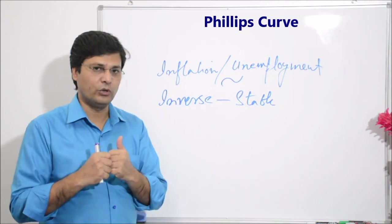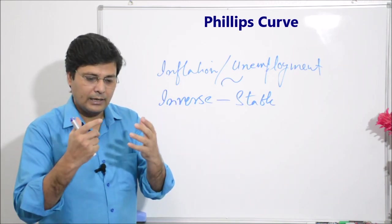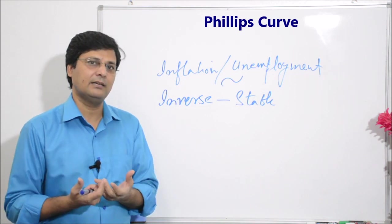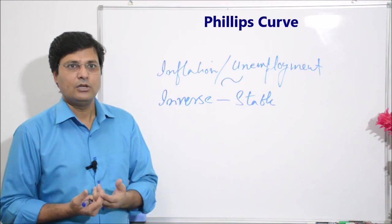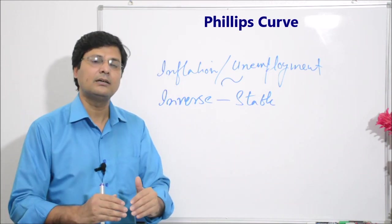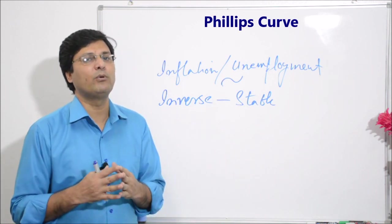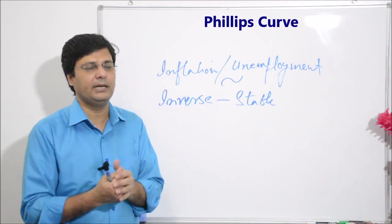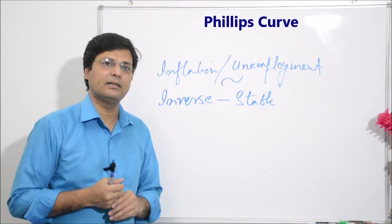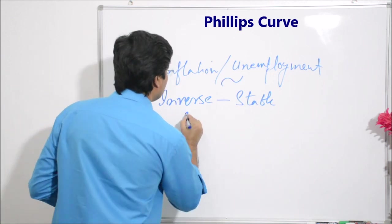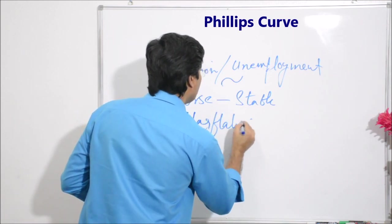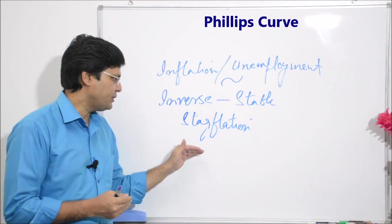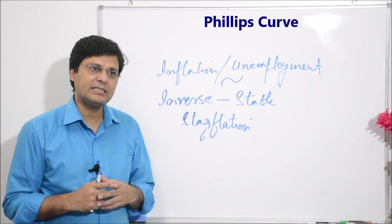What happens when the economy is growing? If you check whether this is empirically tested or not, you can see that in the 1970s there was stagflation. Stagflation means when inflation is very high and unemployment is also very high — that condition is called stagflation. In the 1970s there was stagflation.